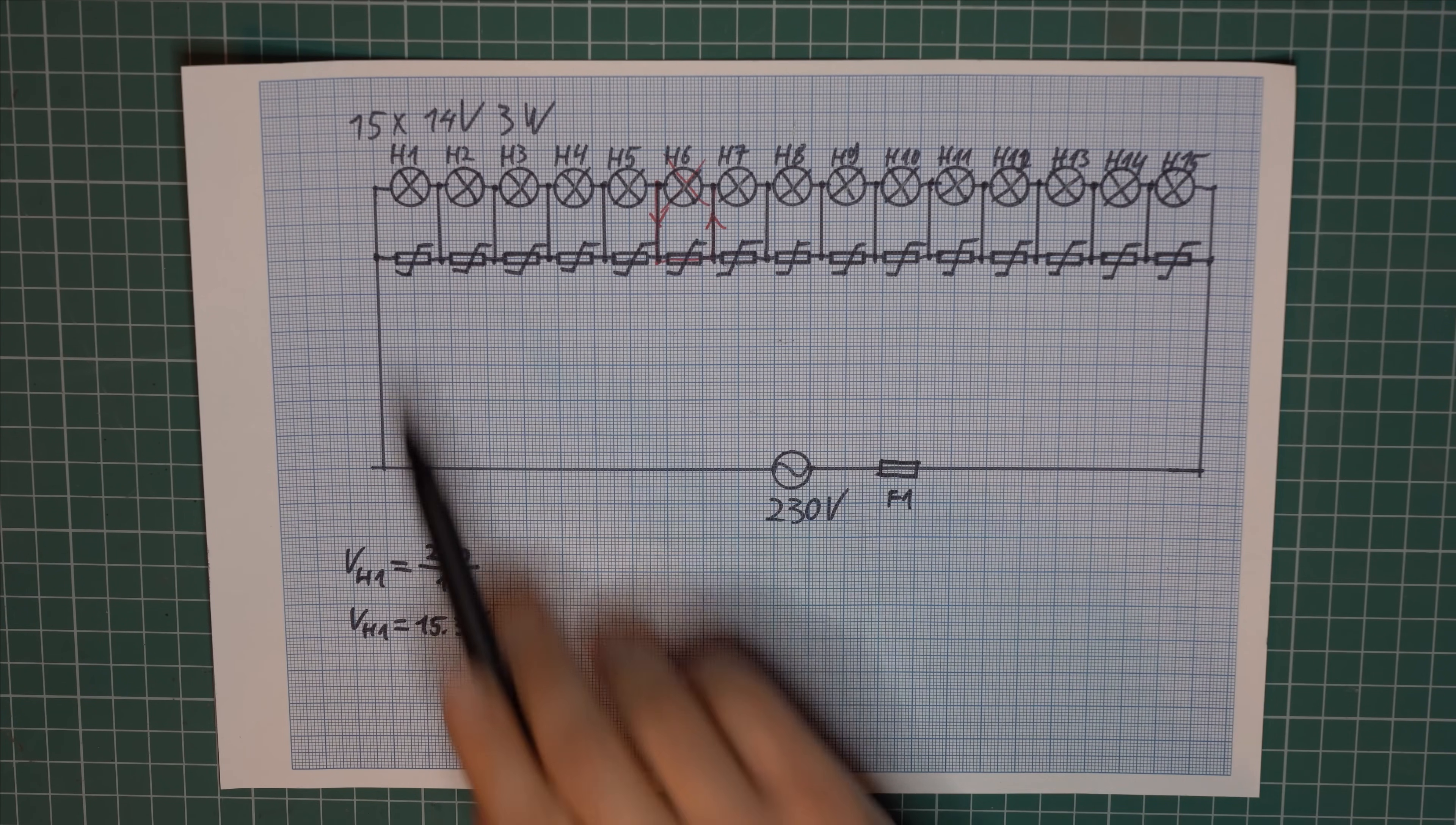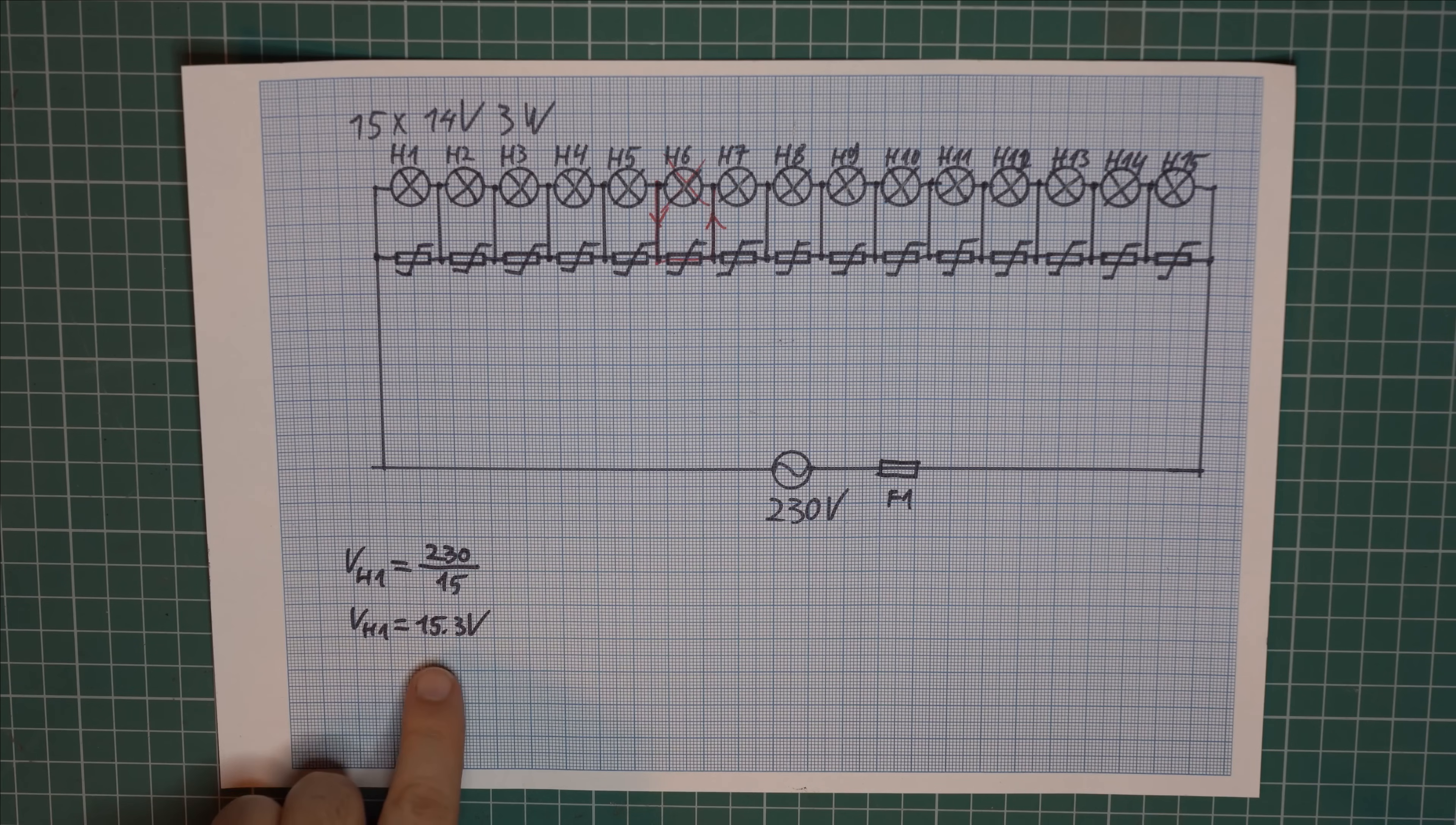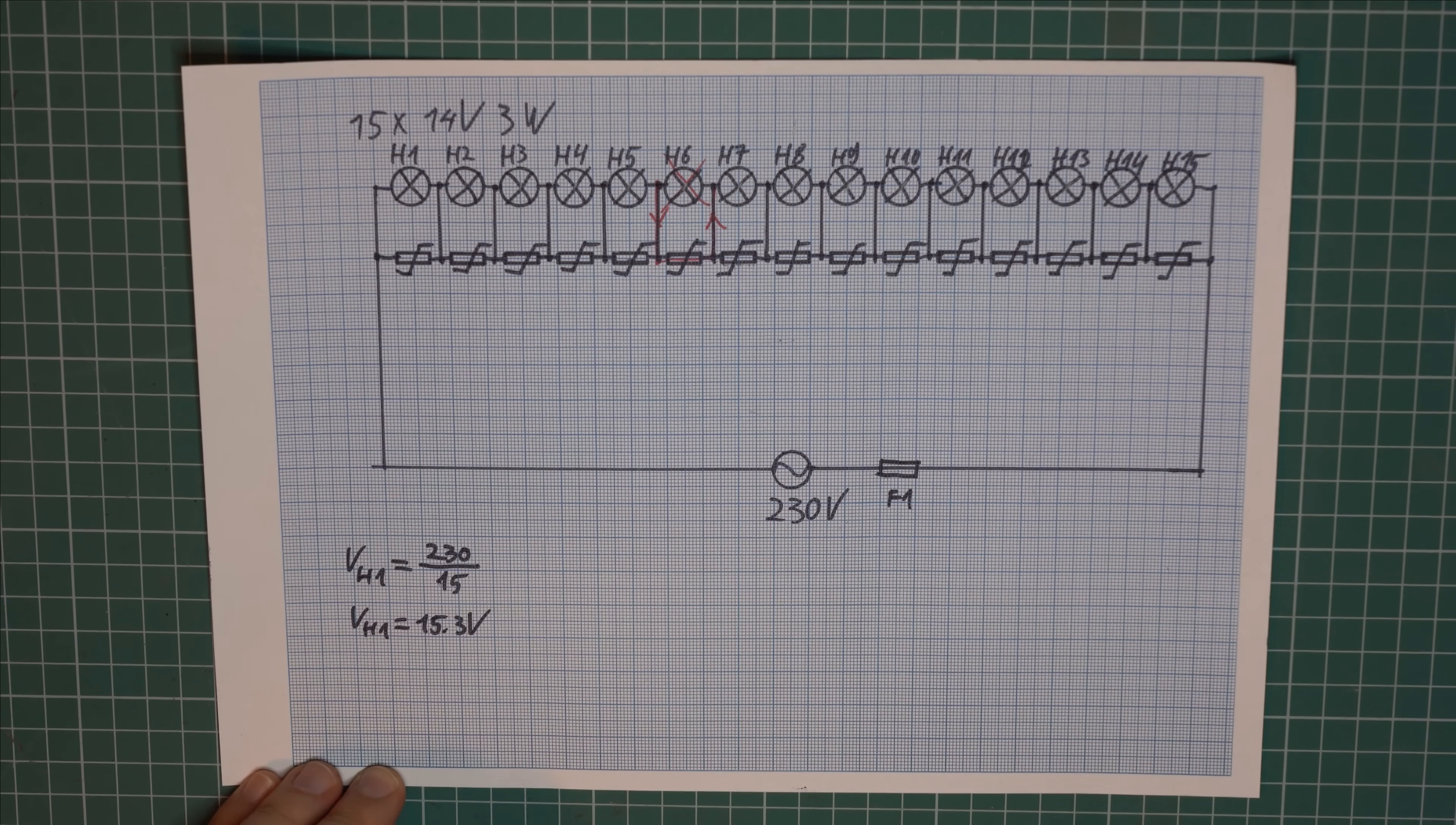And now let's calculate the current. To do this we will ignore the varistors and assume that everything runs in series. So that leaves us with only one possible current to calculate. And here's where we run in a bit of trouble. That's because the lights are in theory 14 volt. However we run them at a slightly increased voltage of 15.3. So to simplify things we can assume that one light is still a 3 watt light even though we run it at an increased voltage, which is basically a wrong assumption. But let's say it's good enough for our math.